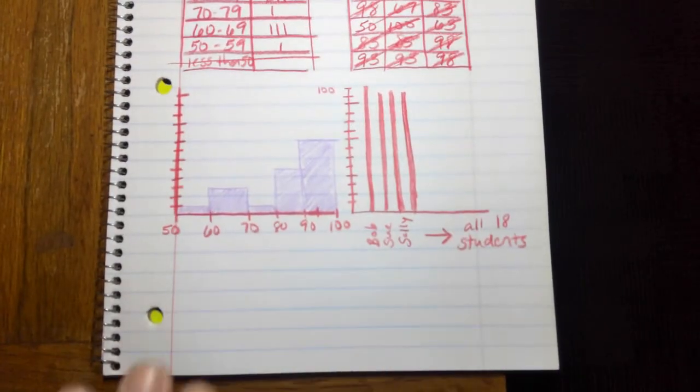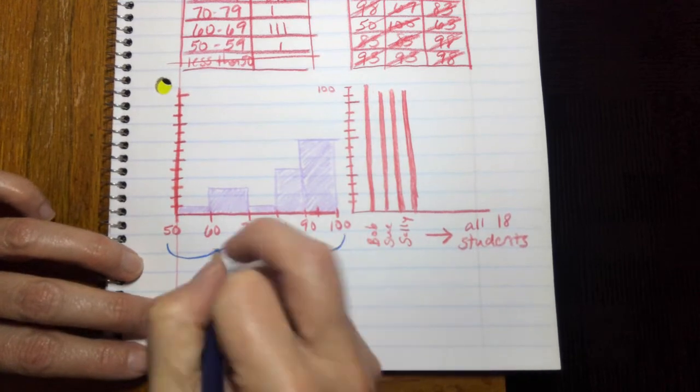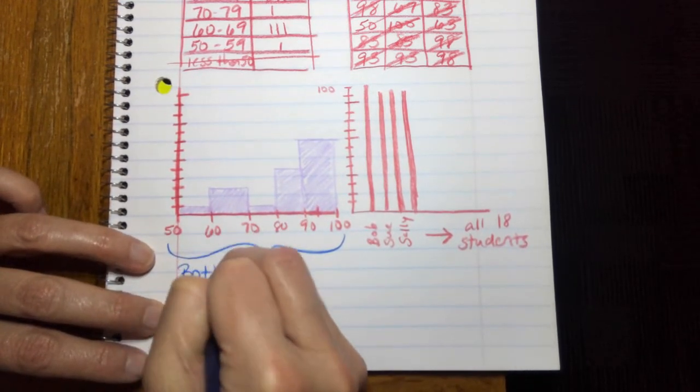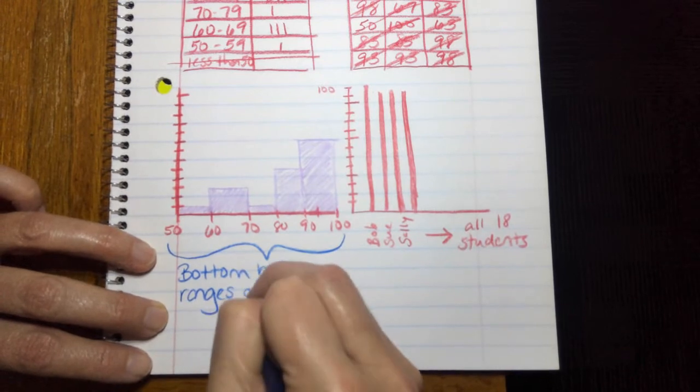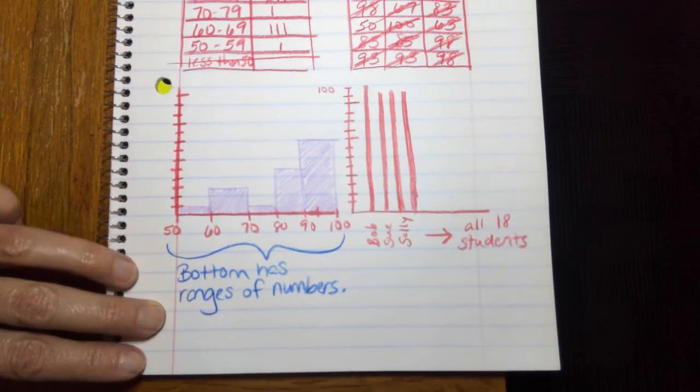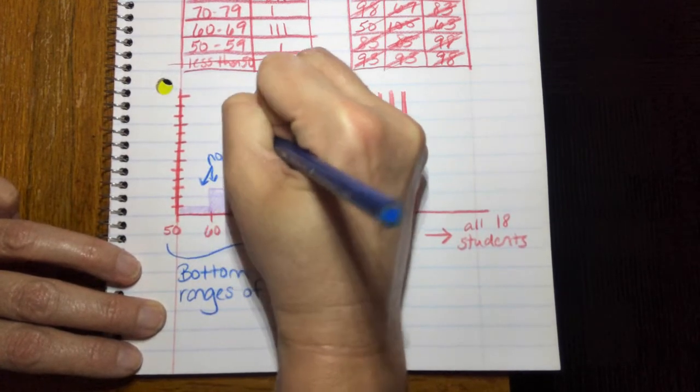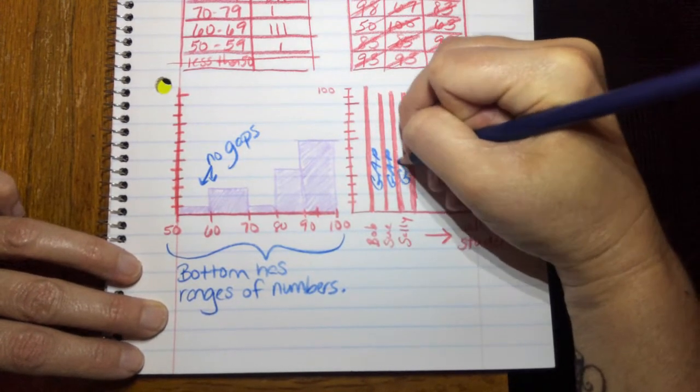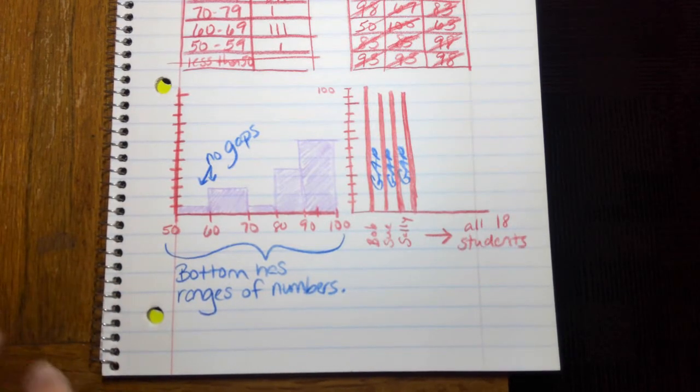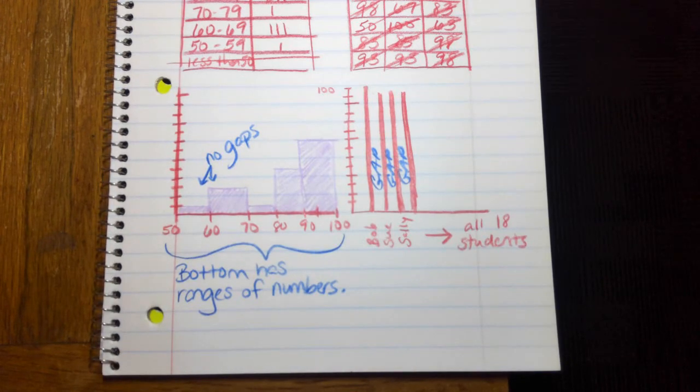But the thing about it that makes it a histogram, the bottom has ranges of numbers, no gaps. Whereas there's a gap here, and a gap here, and a gap here. So a histogram looks like a bar graph, but the big difference is it has no gaps, and the bottom is like a range of numbers.